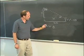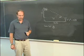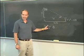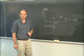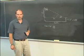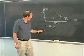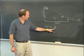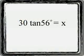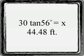Now, in order to solve this equation, we're going to need to use our calculator. Before you do any calculations using sine, cosine, or tangent on a graphing calculator, make sure that you set the mode to degrees. So to do this on the calculator, we're going to need to multiply by 30. So 30 times the tangent of 56 is equal to x, and that comes out to 44.48 feet.